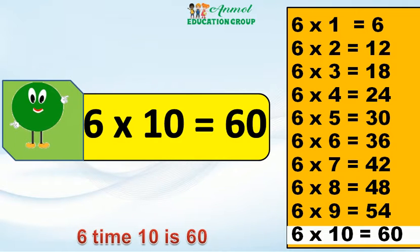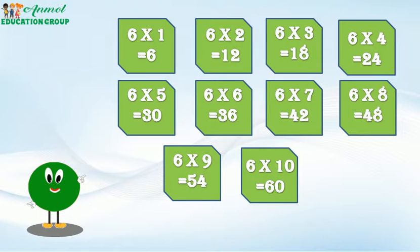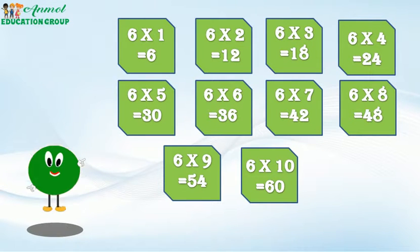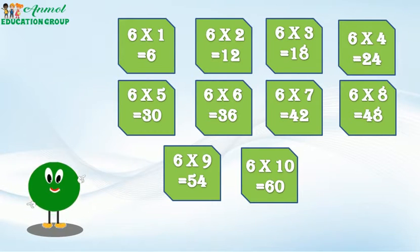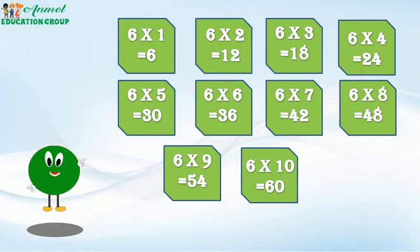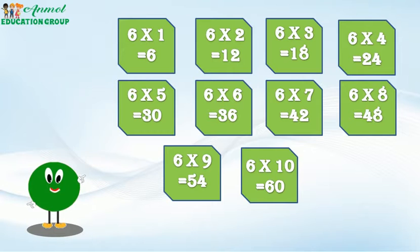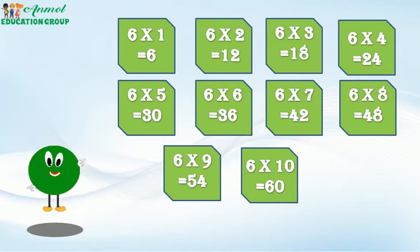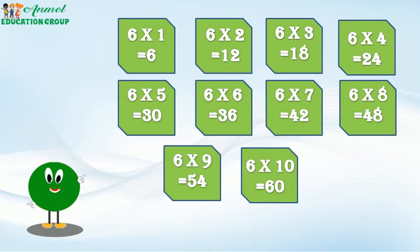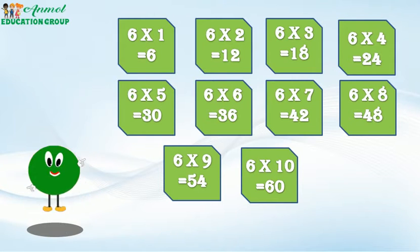6 x 10 is 60. I repeat — table of 6. 6 x 1 is 6. 6 x 2 is 12. 6 x 3 is 18. 6 x 4 is 24. 6 x 5 is 30. 6 x 6 is 36.